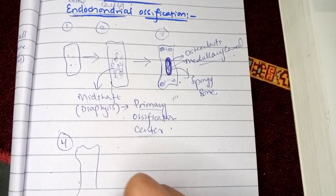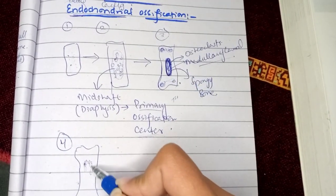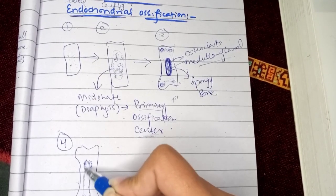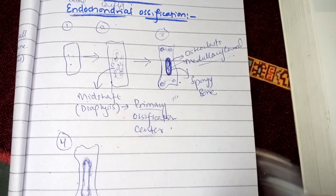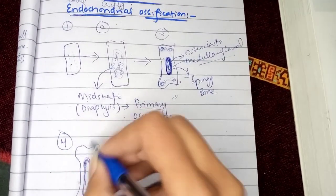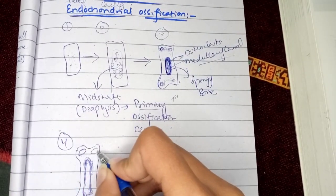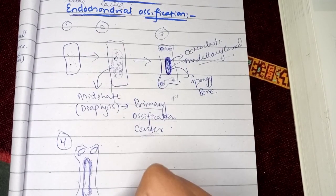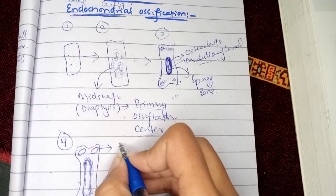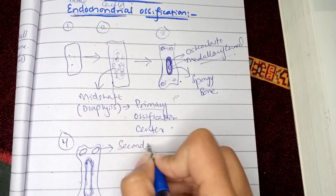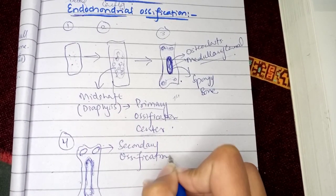As the bone elongates and grows, the cartilage is getting diminished. The second area where bone is being made — at the ends — is referred to as the secondary ossification center.